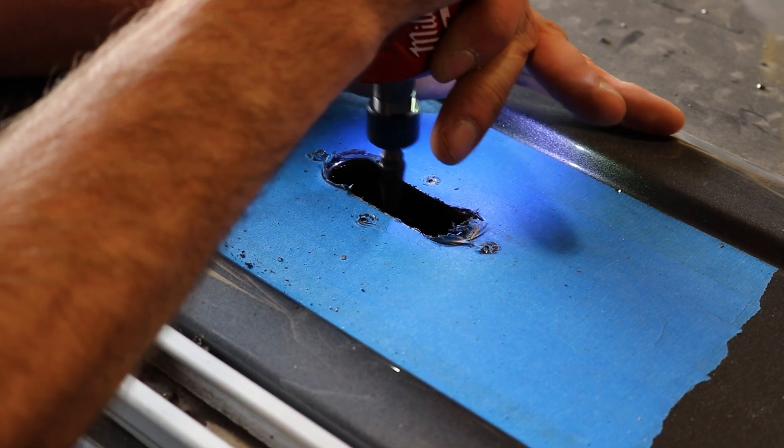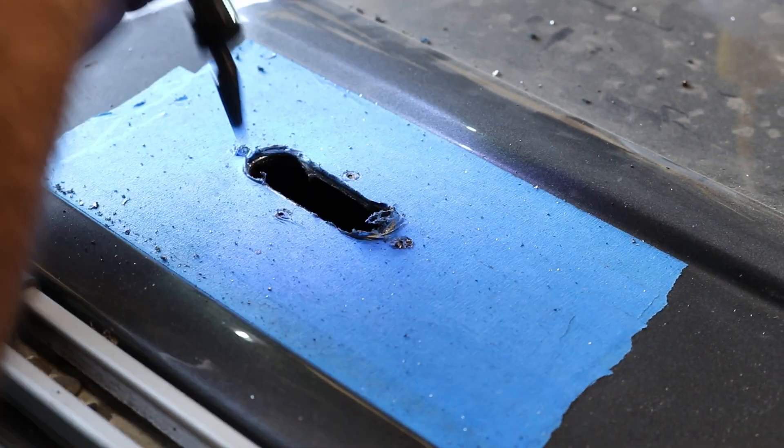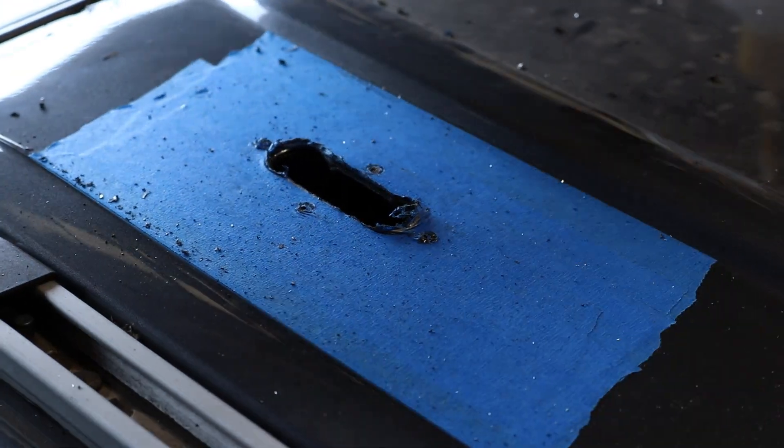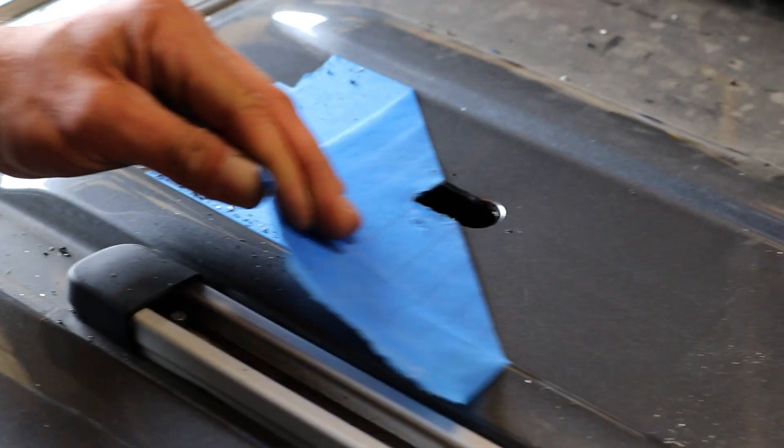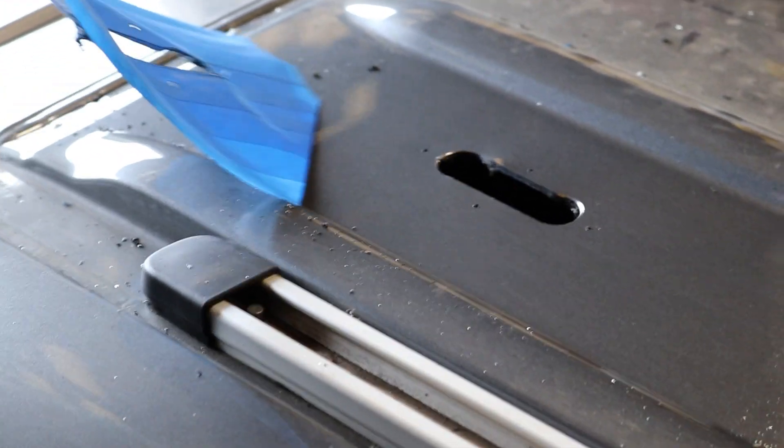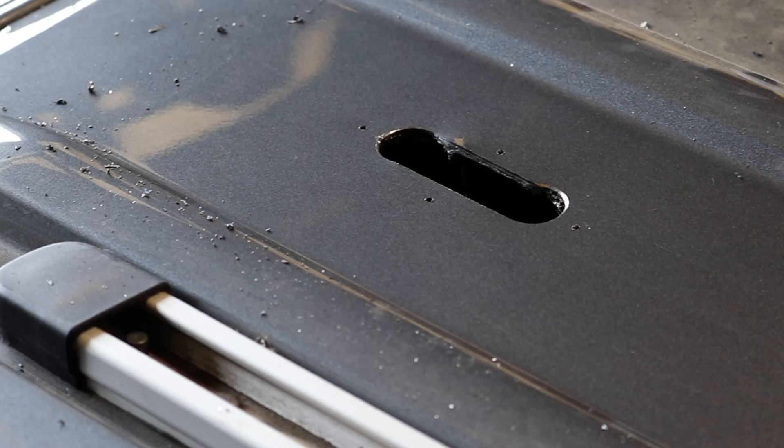So Doug came in here with a die grinder. If you don't have a die grinder, a file works here as well. He's just cleaning up the edge of the cut so there's no sharp edges or burrs. At this point, you can remove the painter's tape because we're done cutting holes and drilling holes.